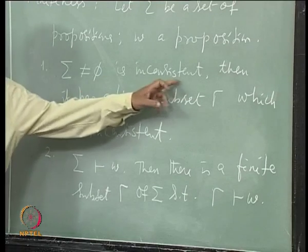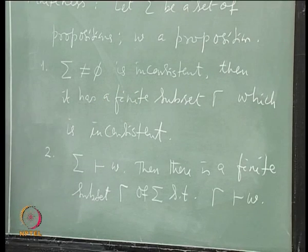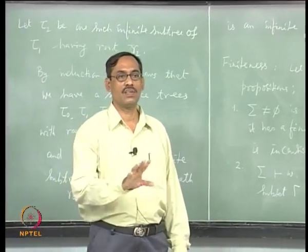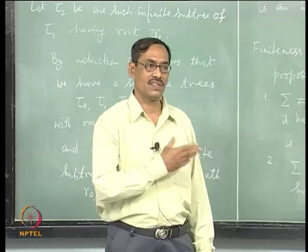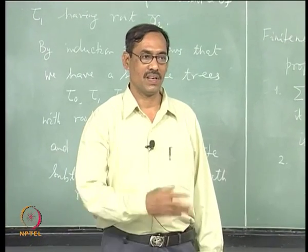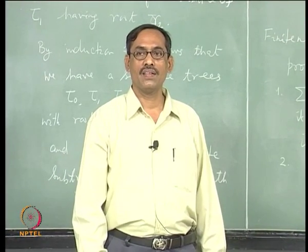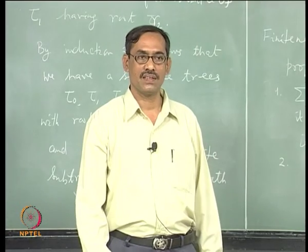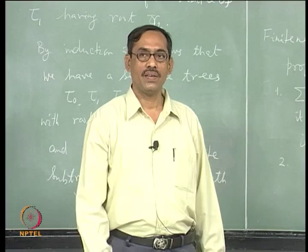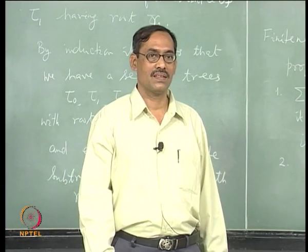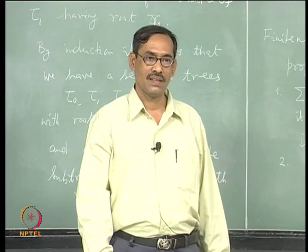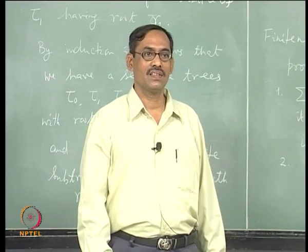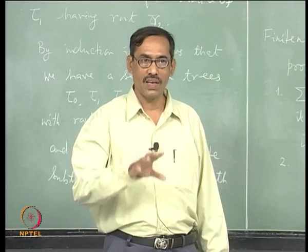Suppose Σ is inconsistent. Once it is inconsistent, consider only the systematic tableau — say it is ordered as written; some ordering is there. In the systematic tableau, you see that it is closed because it is inconsistent. Now, each closed path has to be finite, and it is finitely generated. Now, König's Lemma says the whole tableau is finite.